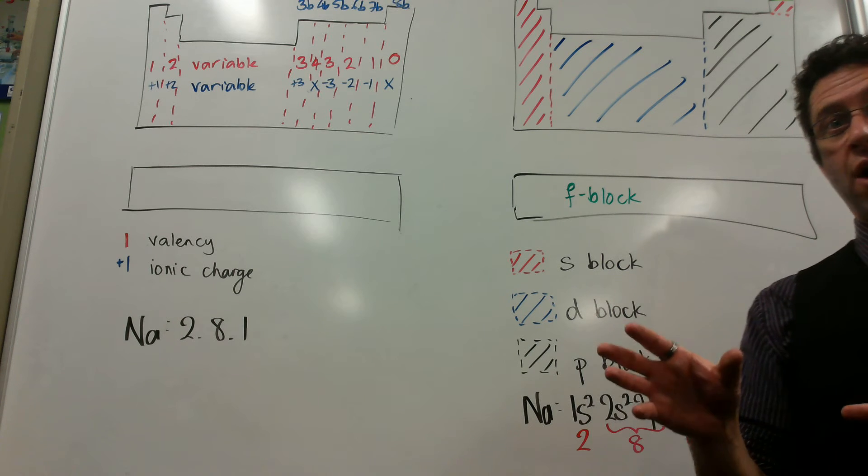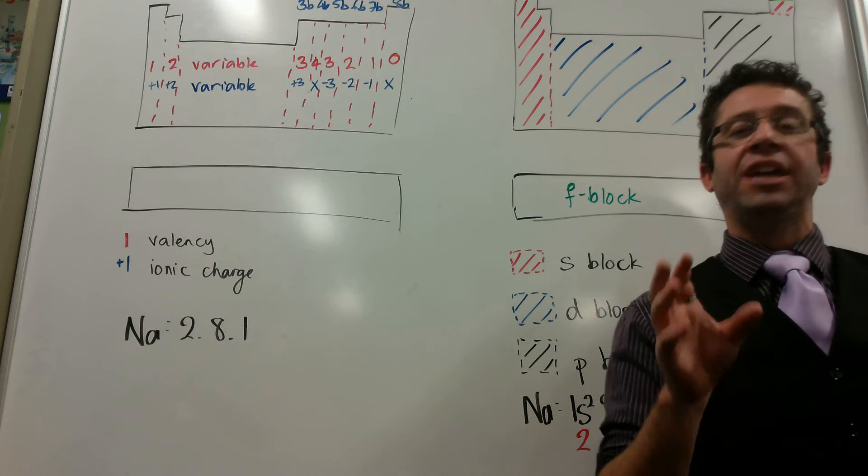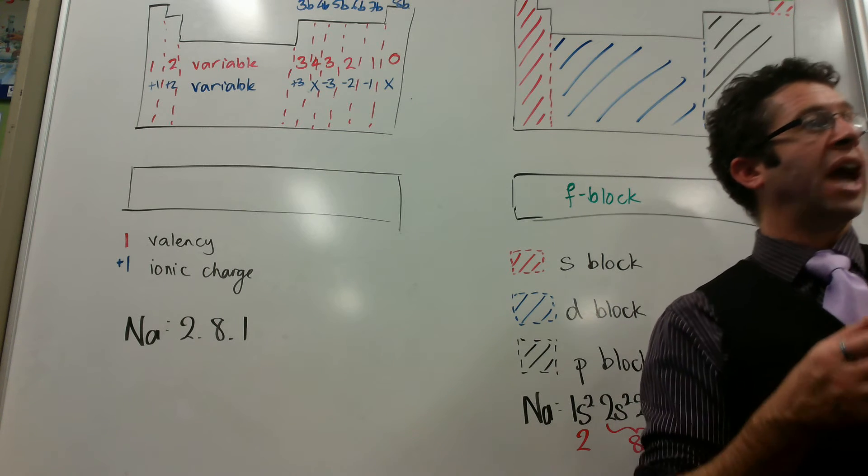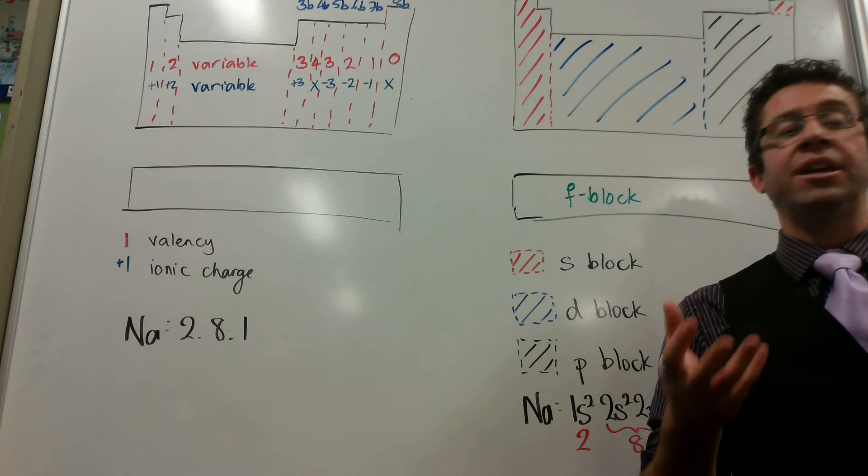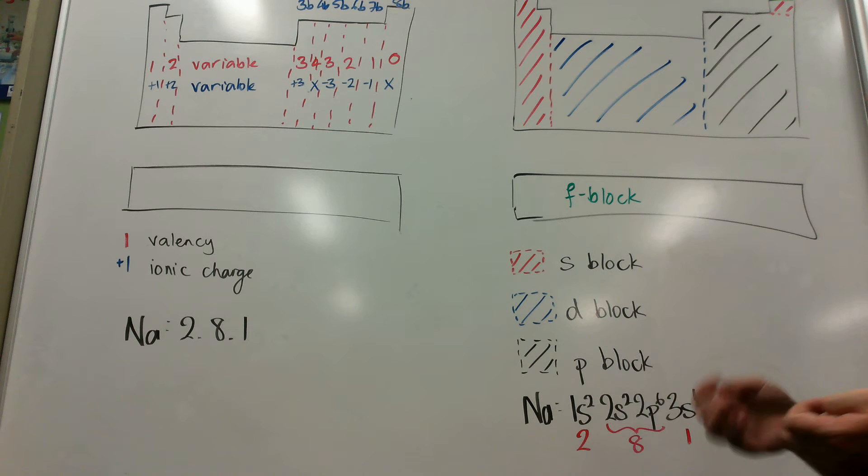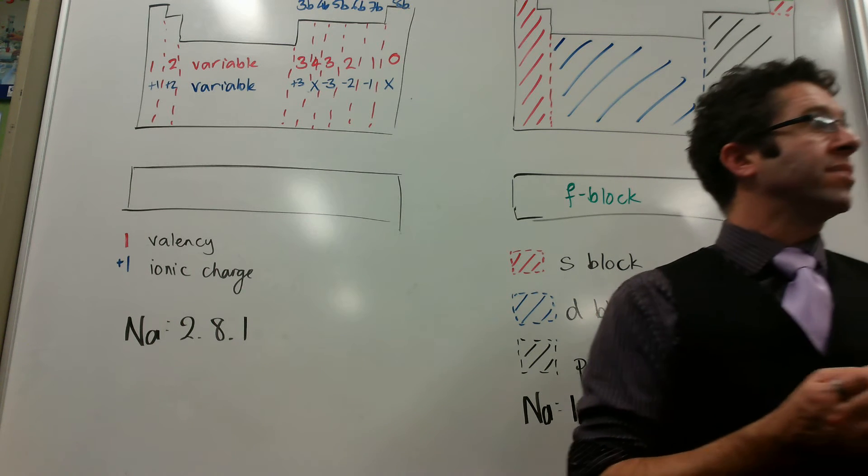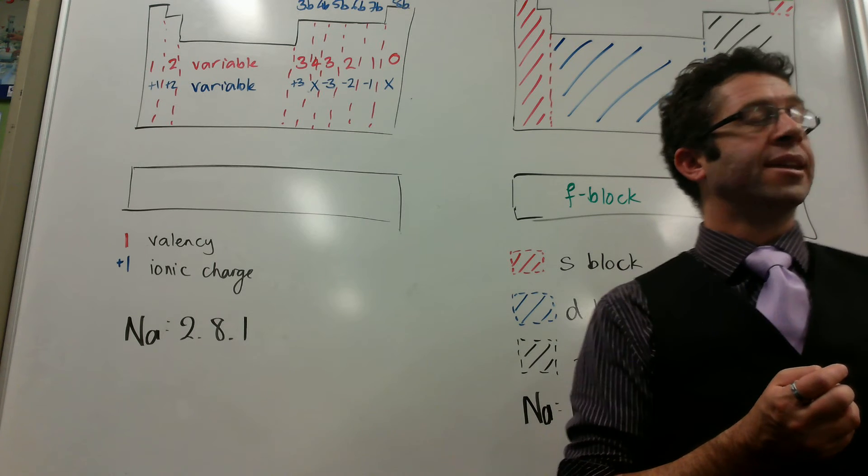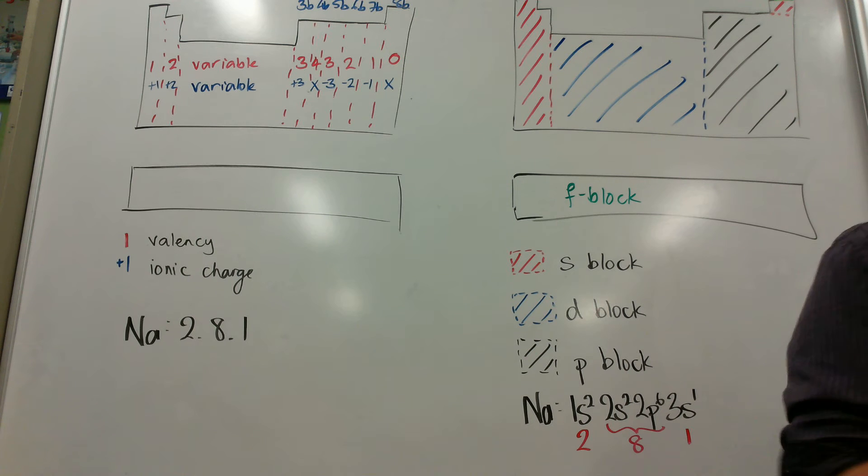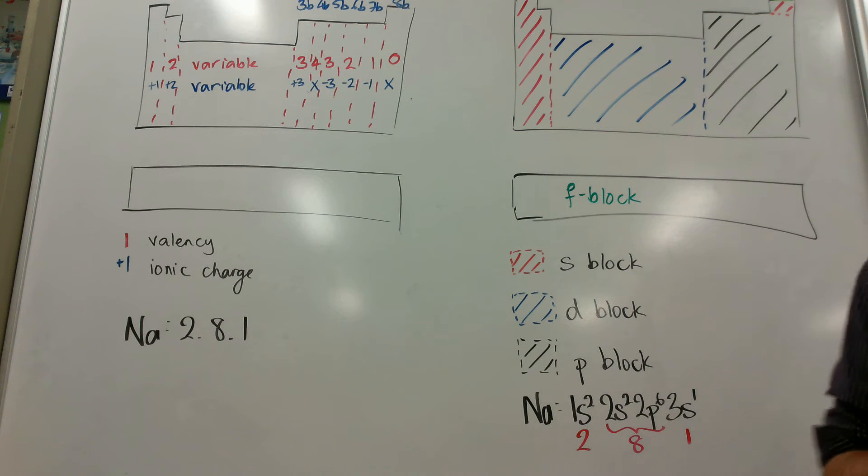So he was able to say there should be an element here, so he could make those predictions. So he came up with these groups, and these are very useful for predicting things like ionic charge and valency. So just to quickly define those two, valency says how many chemical bonds can something make, either by sharing or gaining or losing electrons. It actually falls apart after you get past silicon.